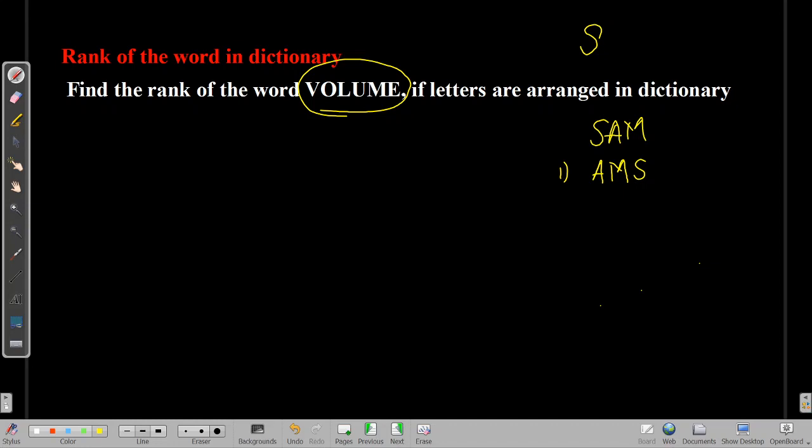Second word will be A, S, M. These two will get permuted. The third word will be, now we'll have the second one here, M, then we'll have A, then S. M, A, S. Next, M, S, A.